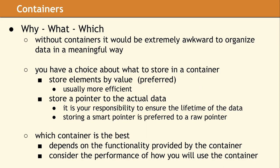Every program has data that it needs to keep track of, and containers provide the abstraction for managing, storing, and traversing that data. When using a container, you will need to choose what you want to store in it. A well-designed container will support elements that have value semantics or pointer semantics. If you want to store a type that has pointer semantics, it is helpful to use smart pointers rather than raw pointers in the container, as it will make memory management much simpler.